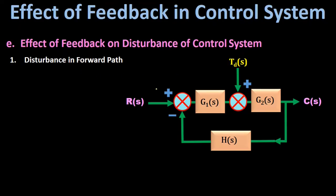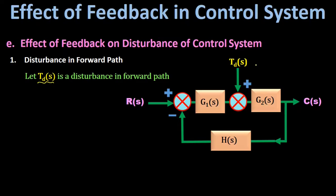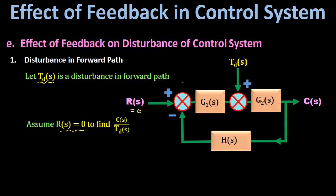This is the block diagram representation of a control system. Let there be a disturbance in the forward path represented by T(s). To find out the effect of this disturbance T(s) on the output, we first assume the input response R(s) is equal to 0. When we do so, this summing point is eliminated and the negative sign is added with the gain H(s).